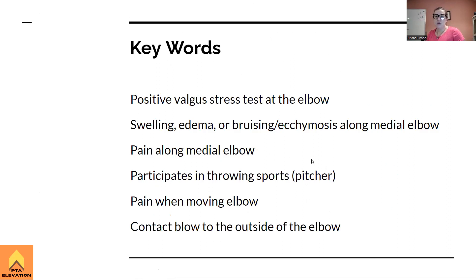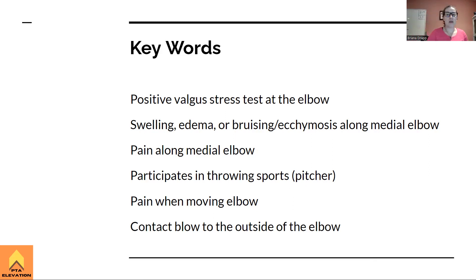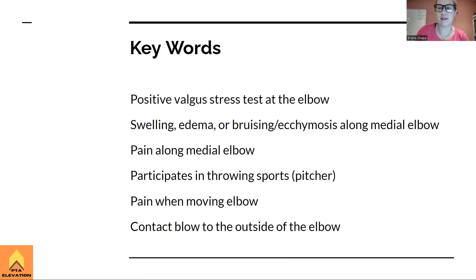Key words for UCL: a positive valgus stress test at the elbow confirms compromise to the ulnar collateral ligament. You'll see swelling, edema, bruising, and ecchymosis at the medial side of the elbow. Pain along the medial elbow and a clinical picture of a baseball pitcher — especially a young player doing high pitch counts — strongly points to UCL. On the boards, if you see a 15-year-old baseball player with 100 throws a game and medial elbow pain, think positive valgus stress test and UCL sprain.